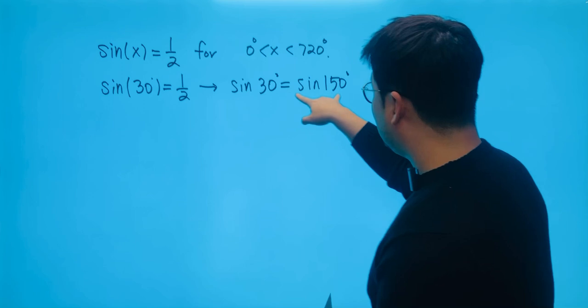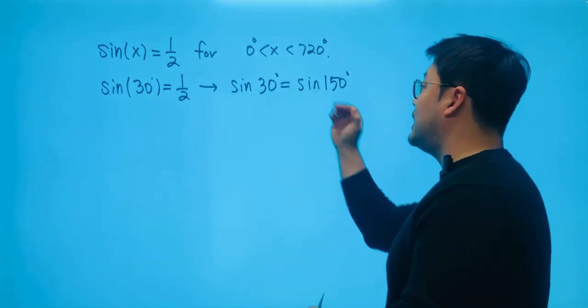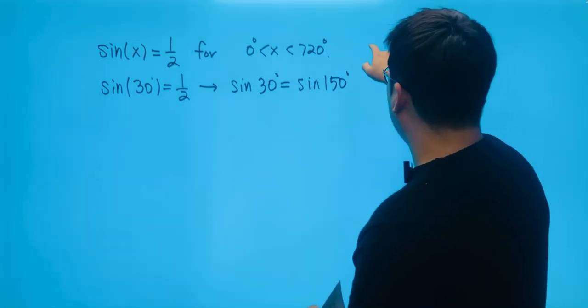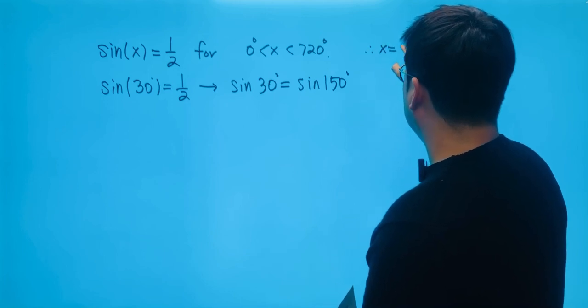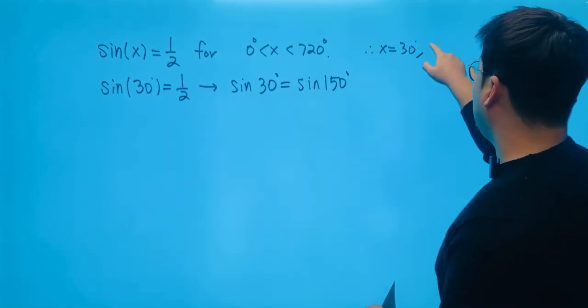Because we know that the supplementary pair is also going to have the same sine value. So we just have found that x equals 30 and 150.